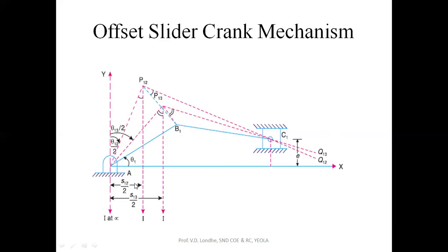You will be knowing the second and third positions of the slider, and also the second and third positions of the crank. Then you take half the distance for the second position and half the distance for the third position. After drawing vertical lines to the horizontal line for the first, second, and third positions, you take half the value of the second and third positions of the crank and join these lines. This line is theta one-two divided by two.